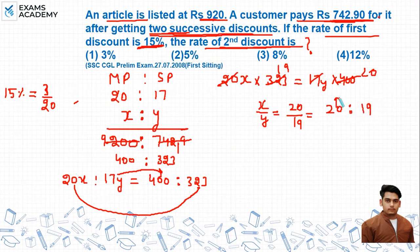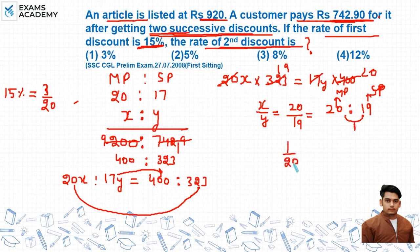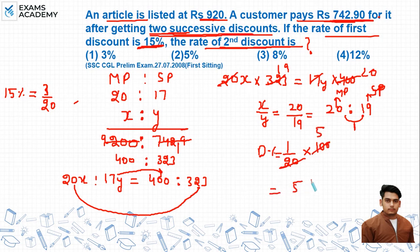So if 20 is the market price, then 19 units is the selling price. The discount is 1 unit out of 20. To find the discount percent: 1 divided by 20 multiplied by 100 equals 5 percent. So the second discount is 5 percent, which is option number 2.